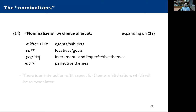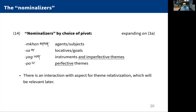Let's talk about the actual inventory of nominalizers. There's a four-way distinction in Tibetan: ken is used for the extraction of agents and a broader set of subjects including non-agentive subjects; sa for the extraction of locatives and goals; ya for relativization of instruments and imperfective themes; and pa for perfective themes. That last bit is an interaction with aspect for theme relativization — we're going to see this interaction at play towards the end of the talk.